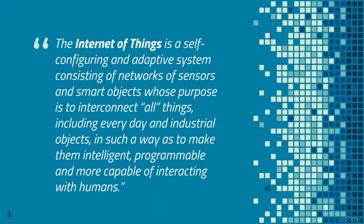The Internet of Things is a self-configuring and adaptive system. It consists of networks of sensors and smart objects. The goal of the Internet of Things is to interconnect these objects and sensors and create an intelligent ecosystem of these objects.